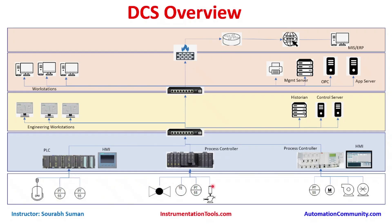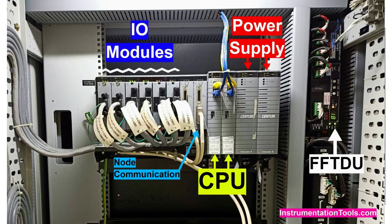These communications do not necessarily happen over TCP/IP. It could be a proprietary protocol, Modbus, DNP3, or IEC 61850 — it depends on the fieldbus protocols used. The protocol between IO cards and field instrumentation can be different, but at the upper levels of the DCS, TCP communication is quite common.